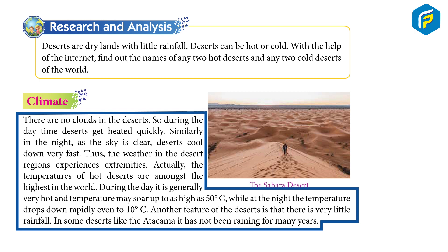The temperature of hot deserts is amongst the highest in the world. During the day, it is generally very hot, and temperature may soar up to as high as 50 degrees Celsius. While at night, the temperature drops down rapidly, even to 10 degrees Celsius. Another feature of the desert is that there is very little rainfall. In some deserts, like the Atacama, it has not been raining for many years.